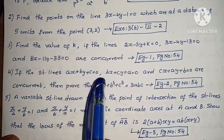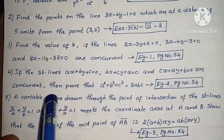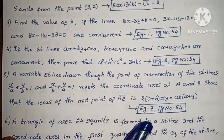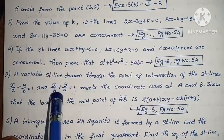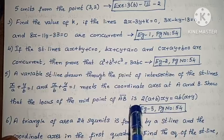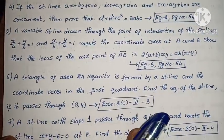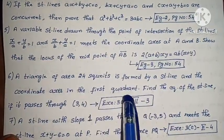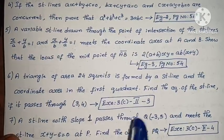Next, if the straight lines ax plus by plus c equals to 0, bx plus cy plus a equals to 0, and cx plus ay plus b equals to 0 are concurrent, then prove that a³ plus b³ plus c³ equals to 3abc. Example 2, page number 54. Next, a variable straight line drawn through the point of intersection of x/a plus y/b equals to 1 and x/b plus y/a equals to 1 meets the coordinate axis at A and B. Show that the locus of the midpoint of AB is 2(a+b)xy equals to ab(x+y). Example 3, page number 54.